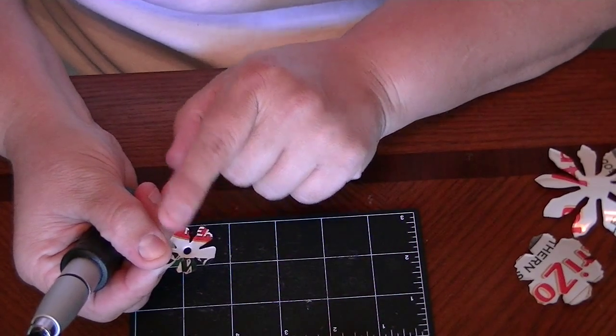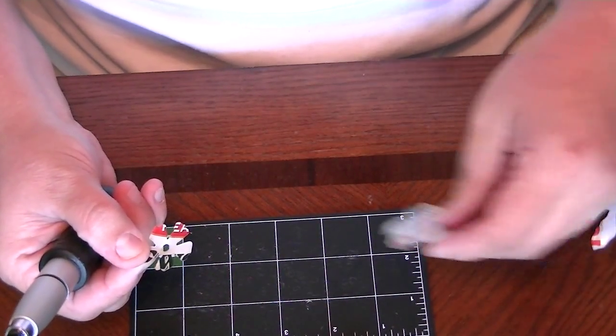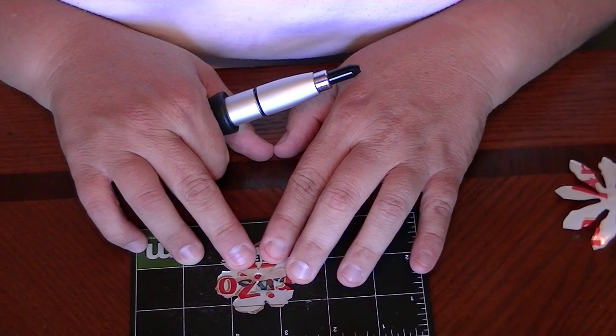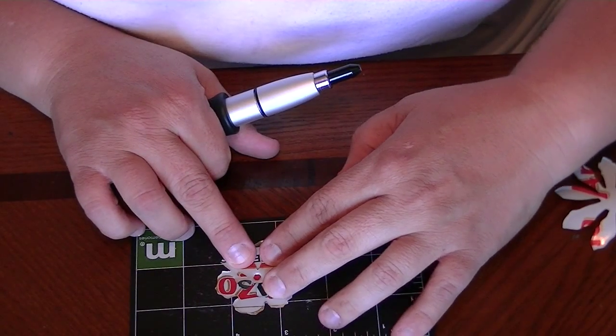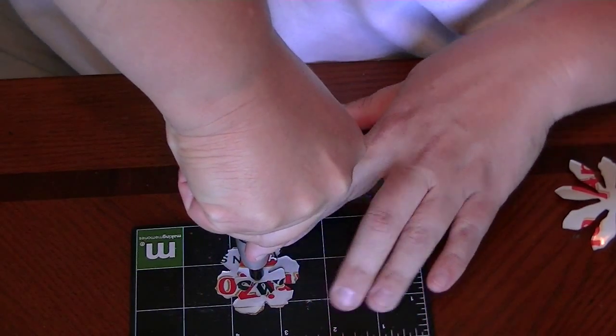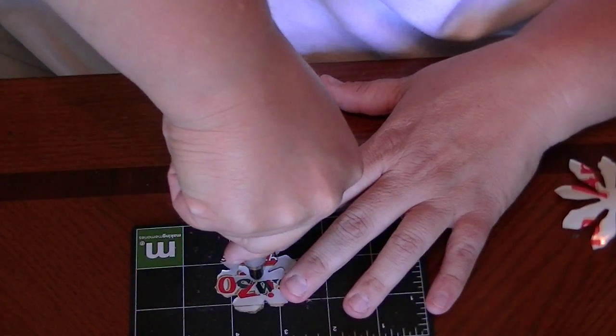So once you have your hole centered here, take the next piece that you're going to use and you're going to center this the way you want it to show up here. And you'll use that hole as a guide to make a hole in your second piece. So I believe it took three.